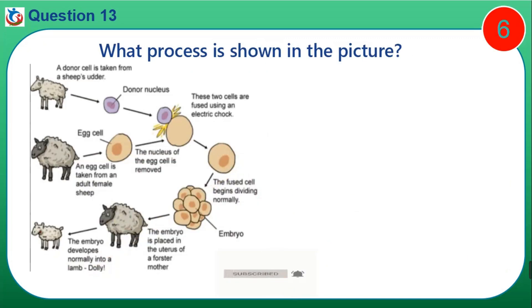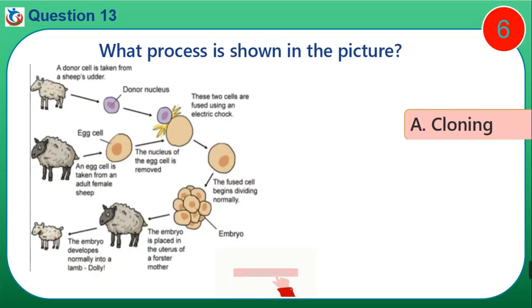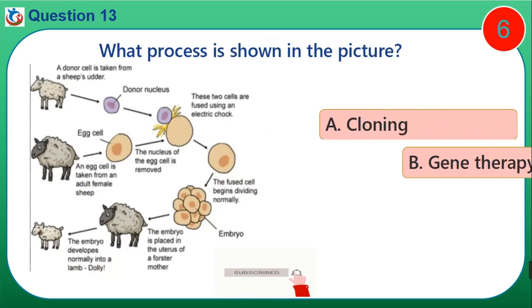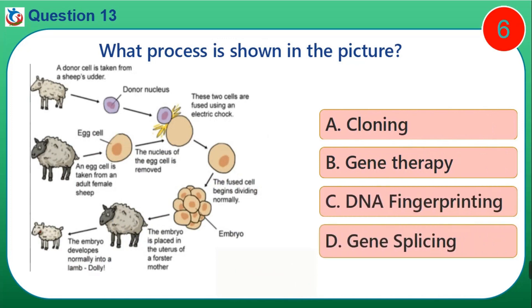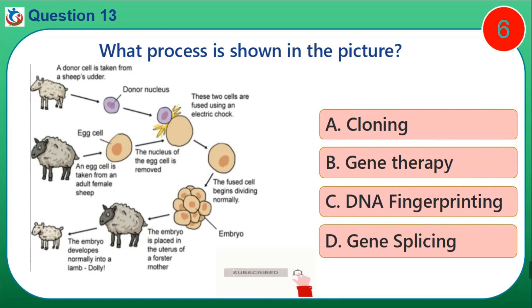Question 13. What process is shown in the picture? A. Cloning. B. Gene therapy. C. DNA fingerprinting. D. Gene splicing.